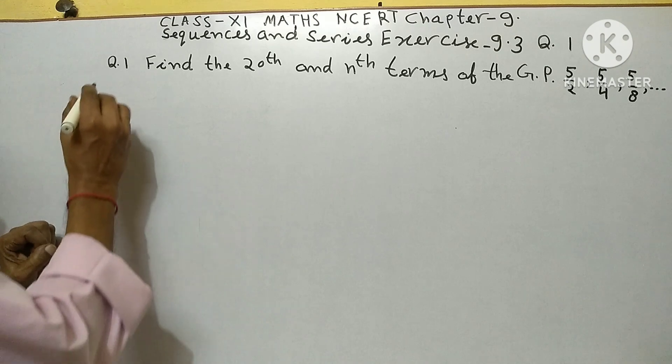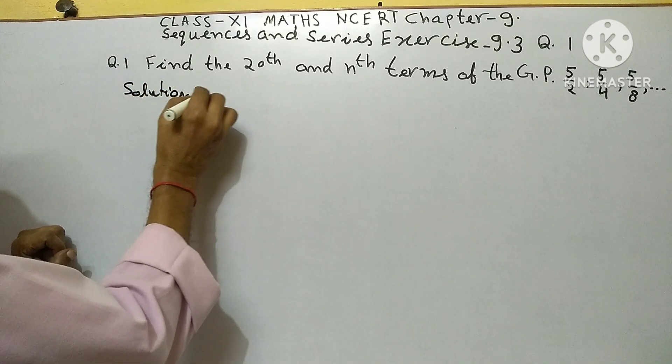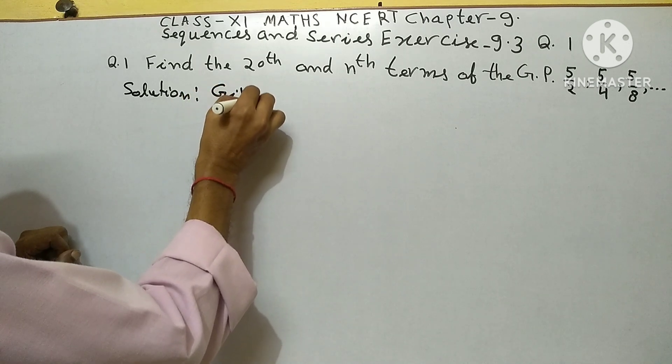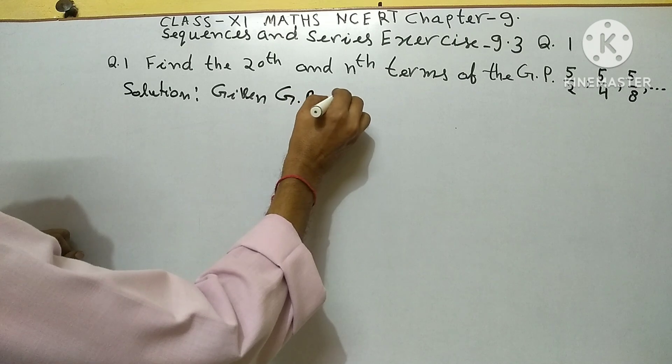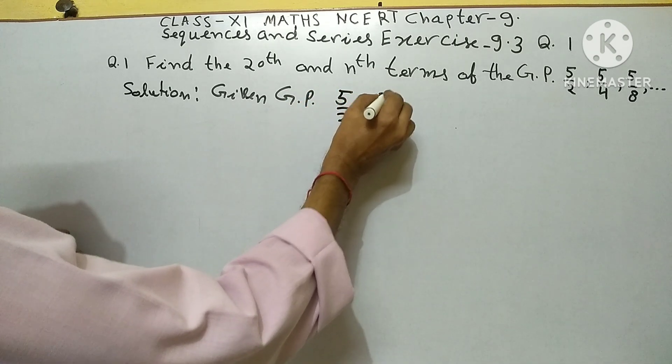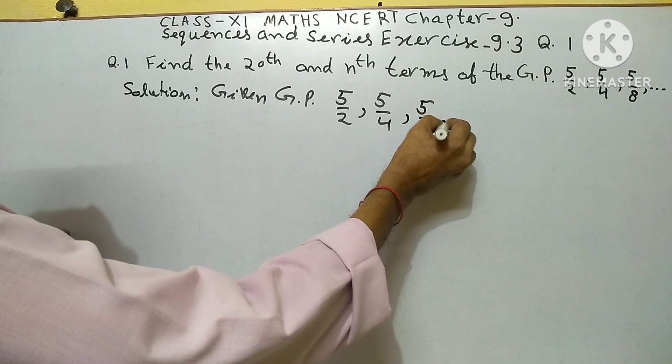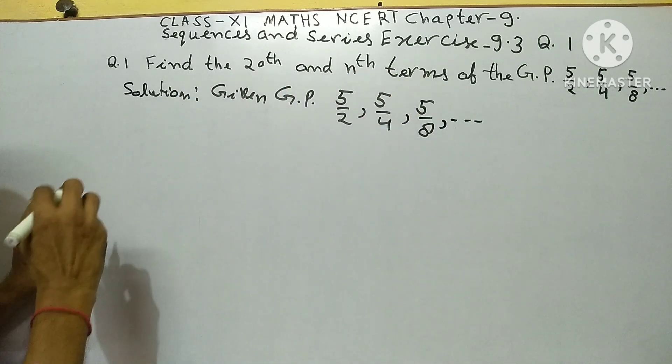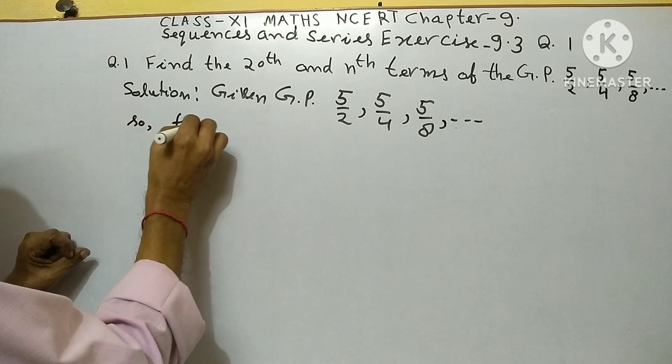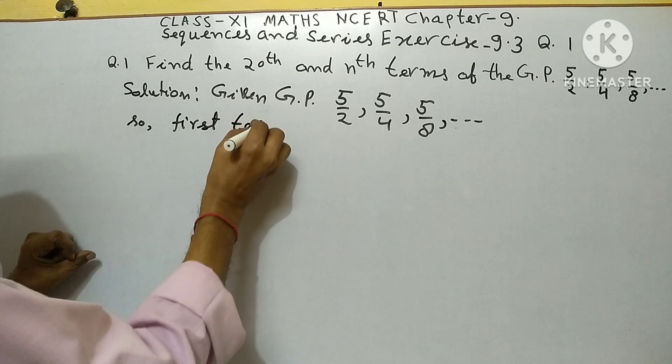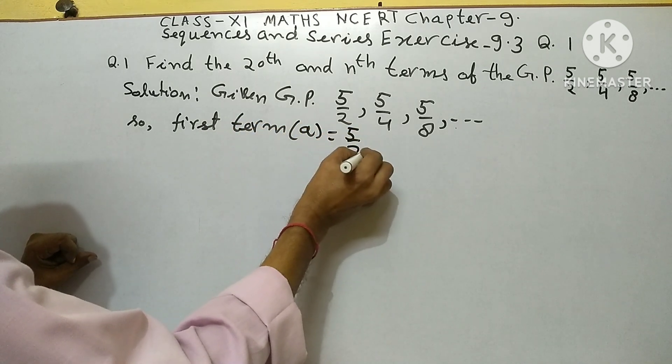Solution: Given GP is 5 upon 2, 5 upon 4, 5 upon 8, and so on. First term a equals 5 upon 2.